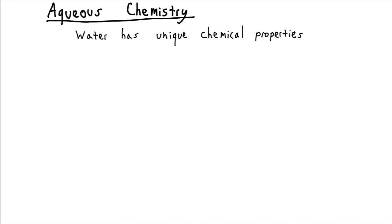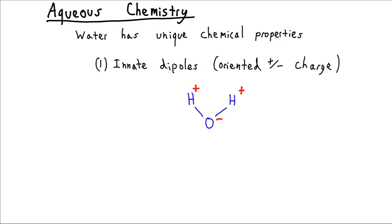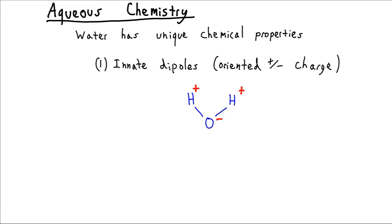Why do we dissolve things in water versus some other substance? Water is actually very special as a molecule. One of the things that makes it unique is that it has what's called innate dipoles. It has partial positive charges on the hydrogens and partial negative charges on the oxygen. Whenever you have charges at a fixed distance from each other, that's what's called a dipole. Because of the presence of these dipoles, water molecules are very good at interacting with other charged substances such as ions.